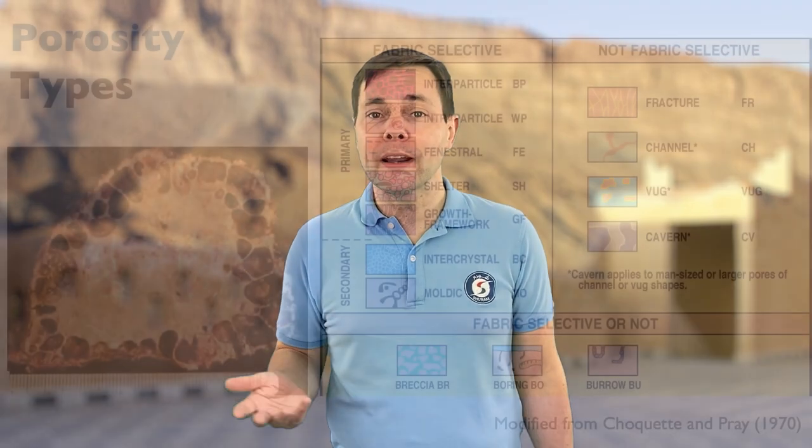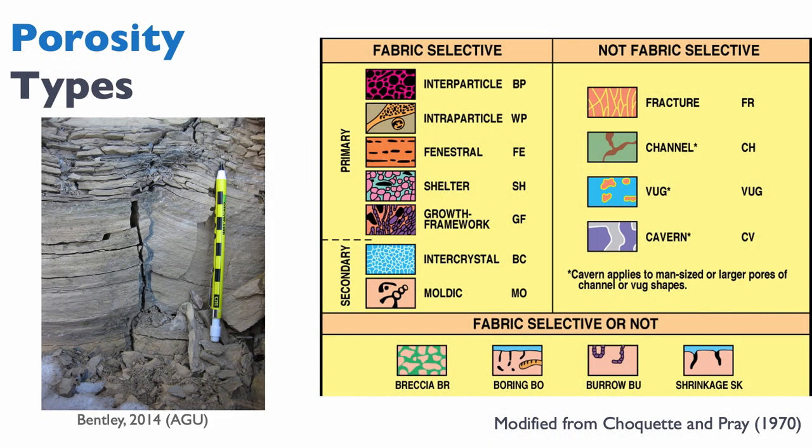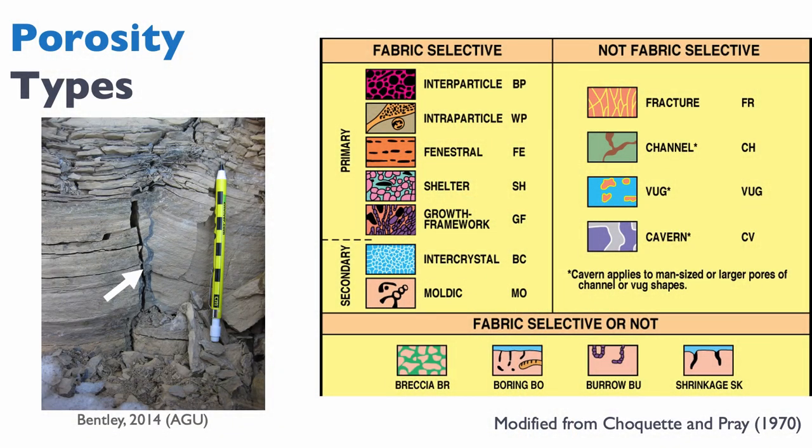On the other hand, you could consider that the rock had to exist before the burrowing or boring organisms, making it a not-fabric-selective porosity because it cross-cuts the fabric of the rock — so again, either interpretation is correct. Finally, shrinkage porosity or mud cracks can also be considered either way: fabric selective if you consider it was present at time of deposition, or not fabric selective if you consider the muds themselves represent the fabric of the rock. Here's a nice example of mud cracks.